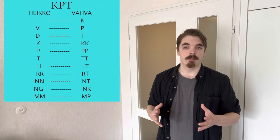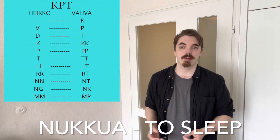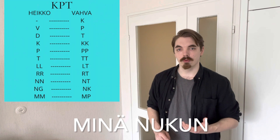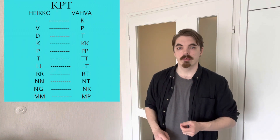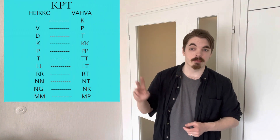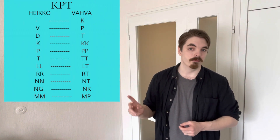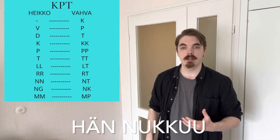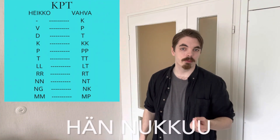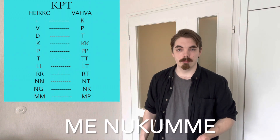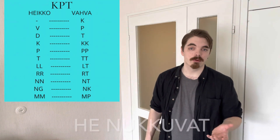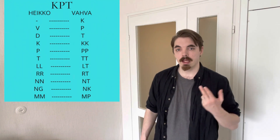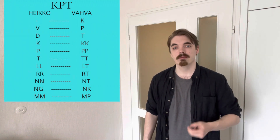For example, if we take the verb NUKUWA, which has two Ks, we get MINÄ NUKUN with one K, because two Ks on the strong side corresponds to one K on the weak side. SINÄ NUKUT, and HAN NUKUWA with two Ks — HAN and HE remain strong.